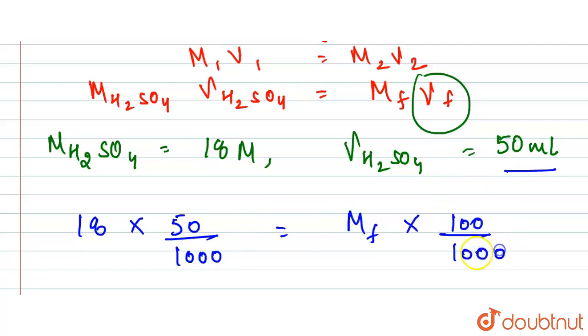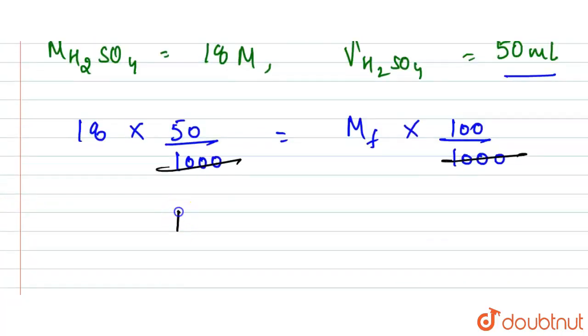So now this 1000 and 1000 got cancelled. So now here our final molarity will be equal to 18 into 50 upon 100.